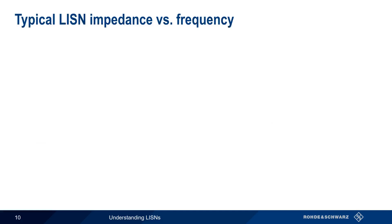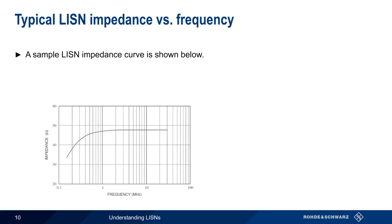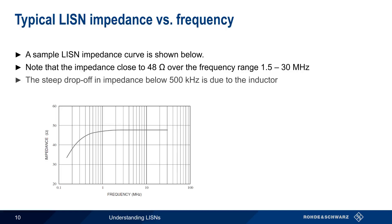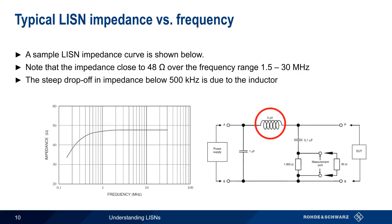Let's compare the curves on the last slide to a sample LISN impedance curve. Note that the impedance is very constant, close to 48 ohms, over the standard conducted frequency range. The steep drop-off in impedance below 500 kHz is due to the 5 µH inductor in our standard LISN schematic.